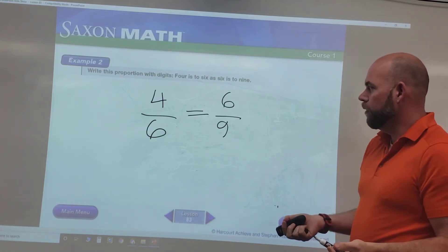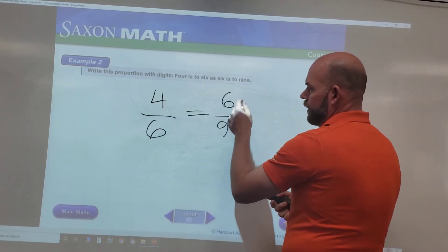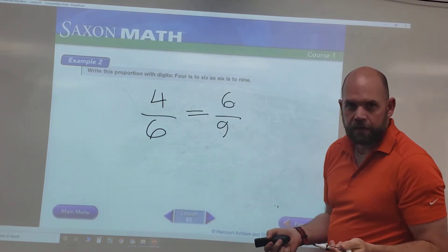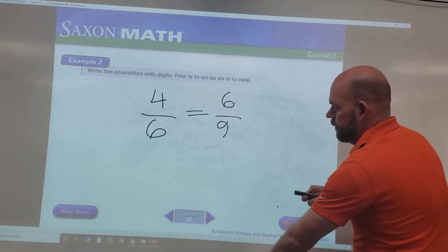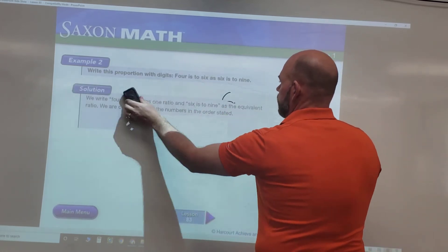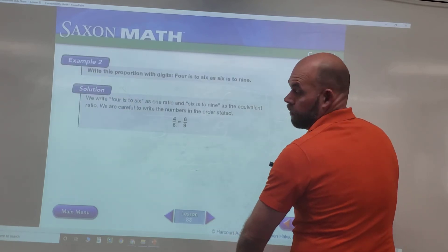So four is to six as six is to nine - that's an equal proportion. Now we can't multiply four by two to get to six or anything like that, so we wanted to check our work on this. It's a little different, and I'm gonna skip that for now.